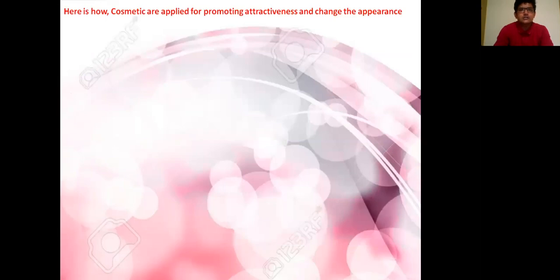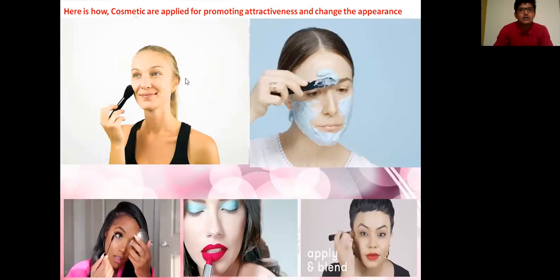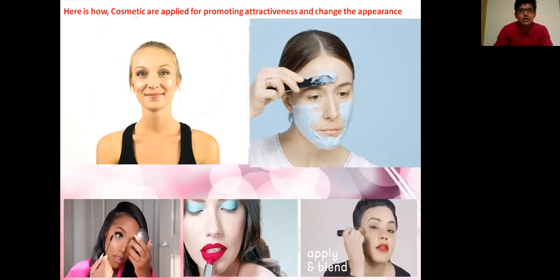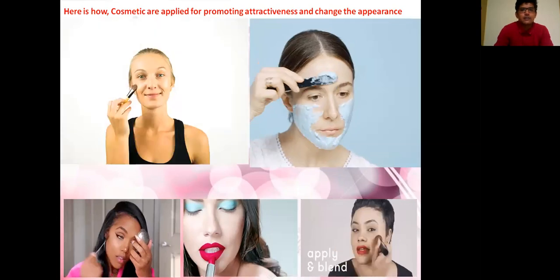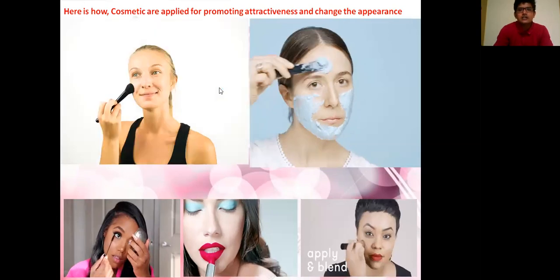Here we can see how cosmetic products are applied on different parts of the body. By definition, any material used for beautification purpose is known as a cosmetic, and different types of products are applied on different body parts for beautification or for changing the appearance of the human body.